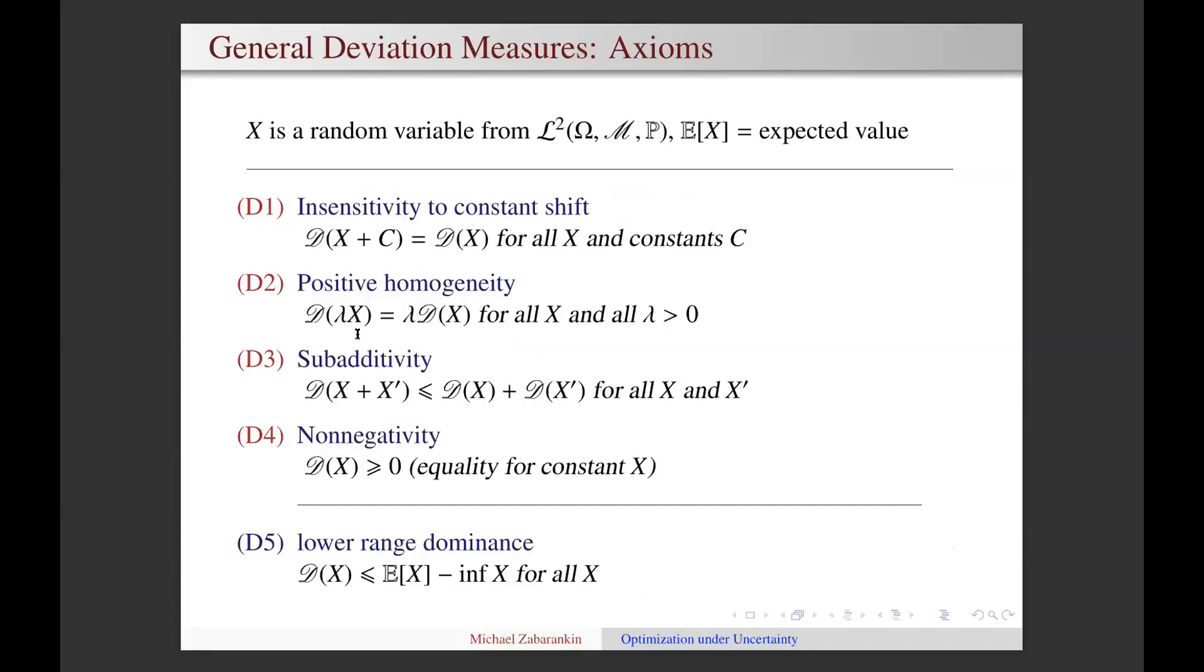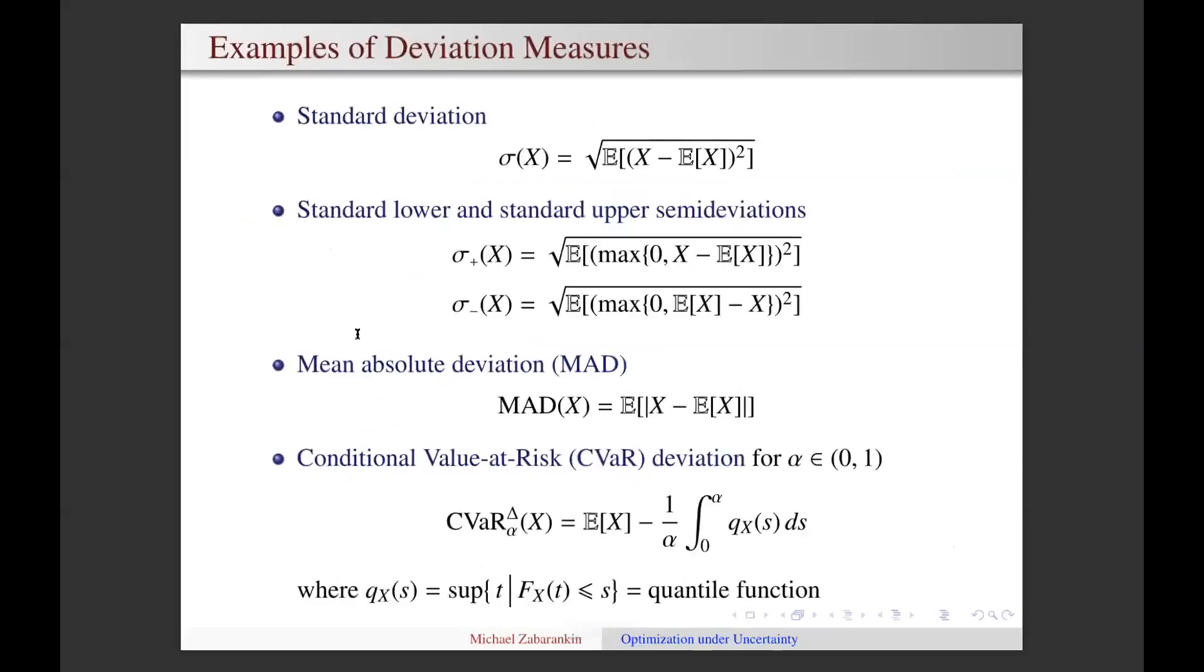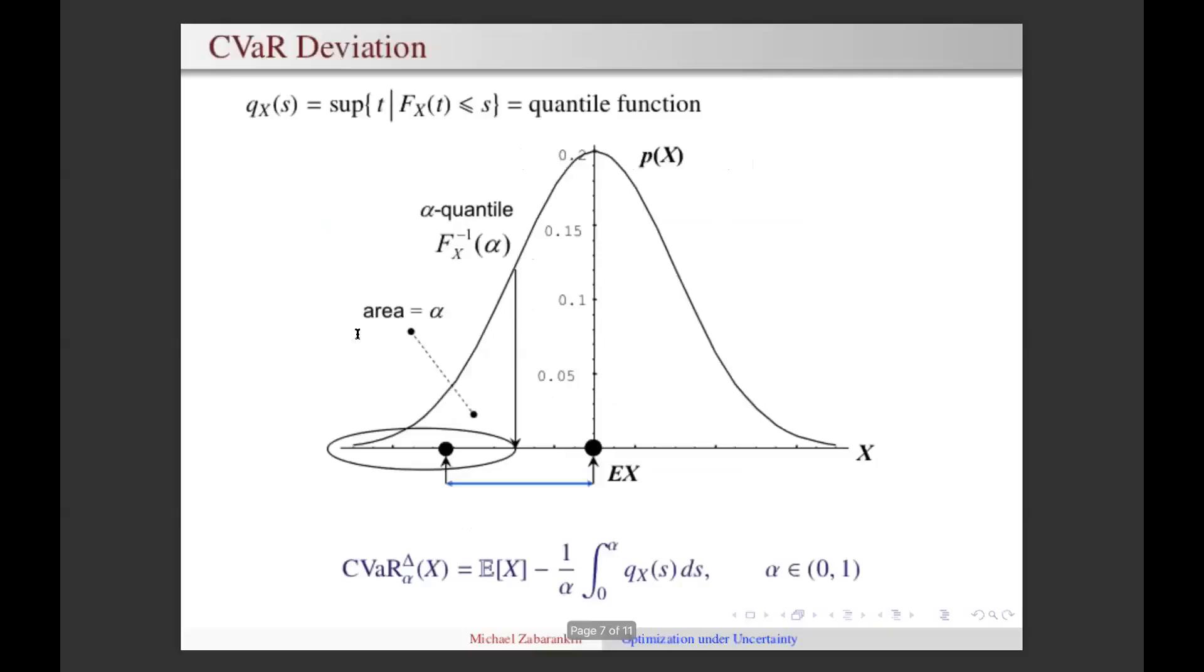If those properties, namely insensitivity to constant shift, positive homogeneity, convexity, and non-negativity are stated as axioms, they define a whole class of functionals called general deviation measures, which include standard deviation as a particular case, but in contrast to standard deviation are not necessarily symmetric with respect to ups and downs of random variables. The class of general deviation measures also include standard lower and standard upper semi-deviations, mean absolute deviation, and conditional value at risk deviation, or simply CVaR deviation.